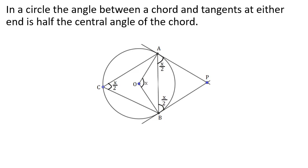The angle between the chord and the tangent at the end is half the central angle of the chord. If the central angle is x, then the angle between the chord and the tangent equals x divided by 2.